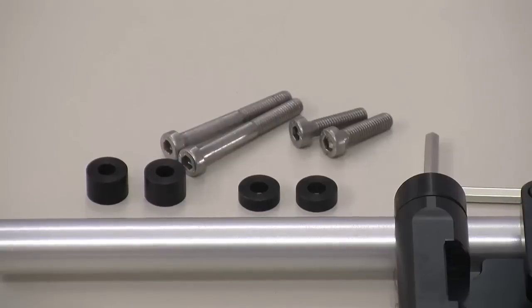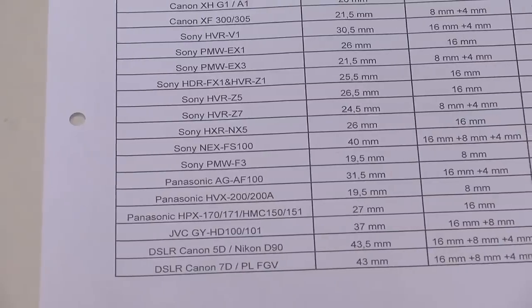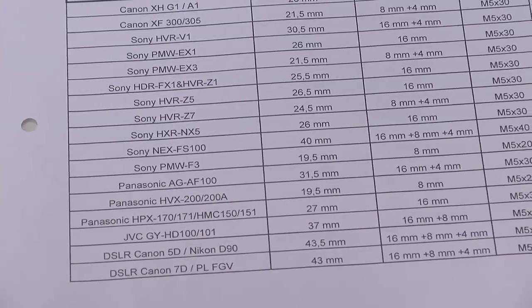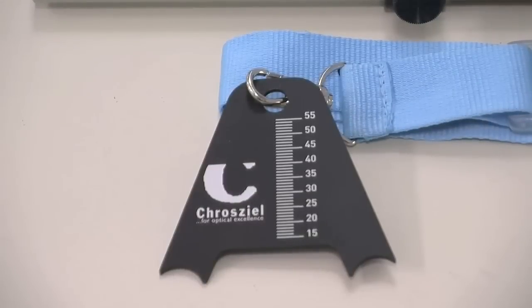Let's take Sony's FS100 for example. The table says we need the complete set of spacers and height shall be 40mm.